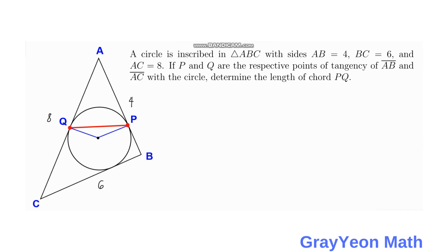First, we have to draw the perpendicularity between AC and Q — that is perpendicular, and this is perpendicular also. We are to determine the length of chord PQ. Next, we label the center of the circle as O and draw a line from point A to the center of the circle.